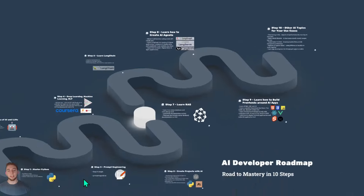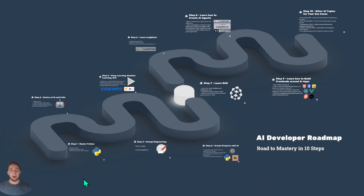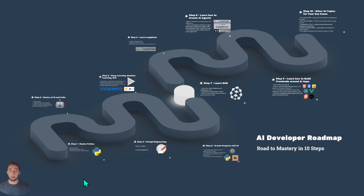That is everything I have for the AI developer roadmap. My goal is to make it clear-cut what to learn for AI, because it is overwhelming how much is out there — how many different technologies, patterns of development, and topics around AI. I hope this makes it easy for you to decide what path forward you want to take with learning AI. Let me know if there's anything else you'd want me to include, and if you found this helpful, I'd really appreciate a like and a subscribe.